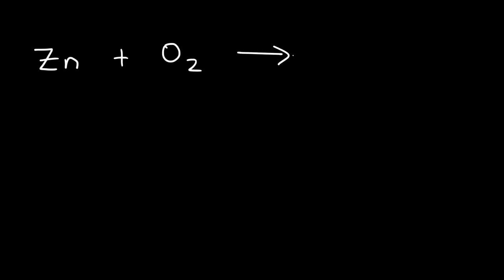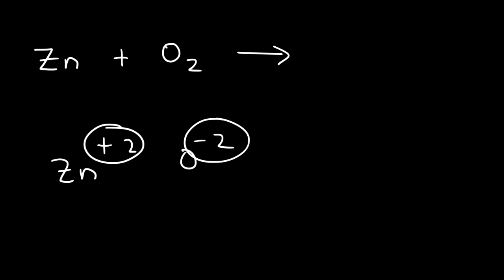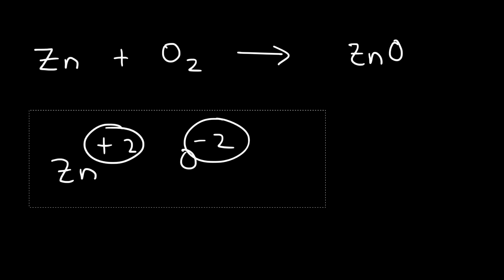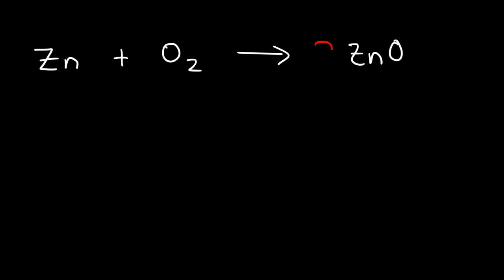If we react zinc with oxygen gas, when you mix two elements together you get a combination reaction — they combine to form a compound. A compound between zinc and oxygen: zinc has a +2 charge and oxygen has a -2 charge. When two ions have the same magnitude of charge they combine in a one-to-one ratio, so the product is zinc oxide, ZnO. To balance, put a two in front of zinc oxide and a two in front of zinc.